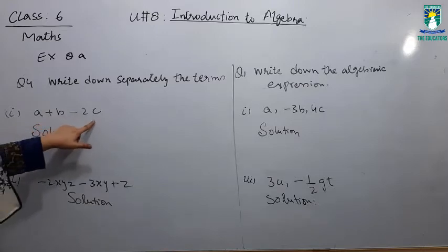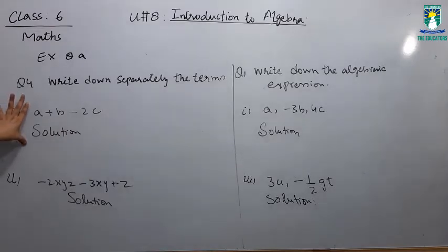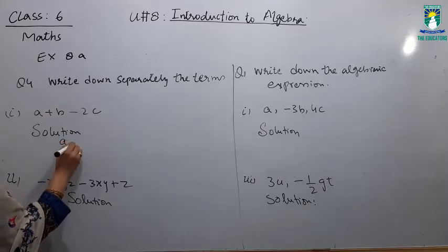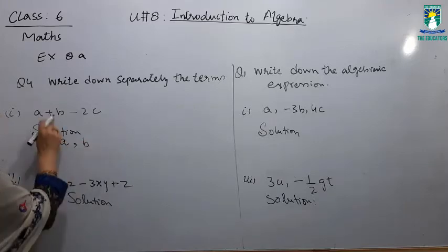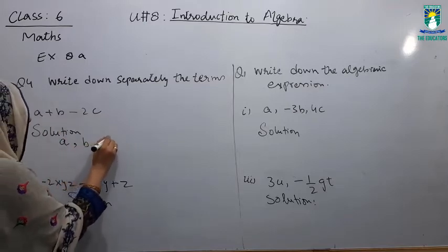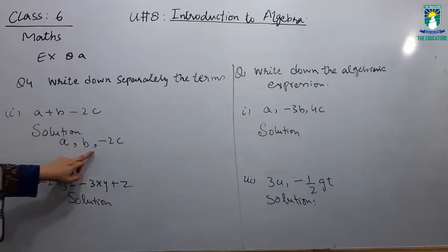If you look at this expression, it is a plus b minus 2c. There are three terms in this algebraic expression. You have written a, then b. Plus sign is required. It means that the terms of the algebraic expression are made: a, b, and minus 2c.